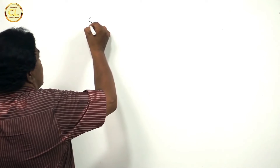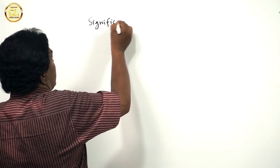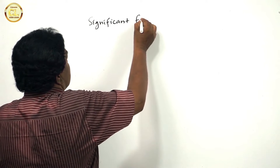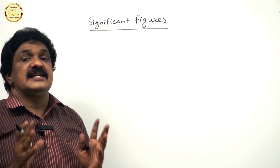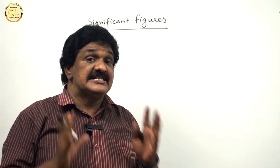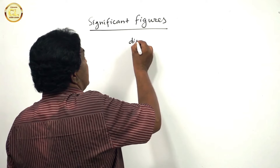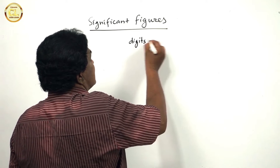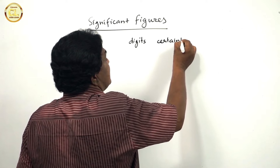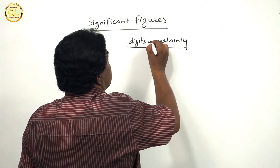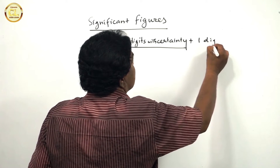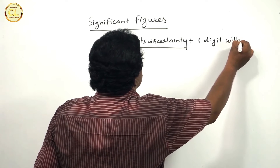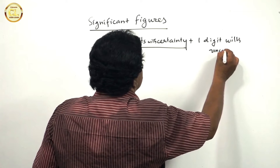Significant figures. What are significant figures? Significant figures are the digits in a number with certainty, plus one digit with uncertainty.